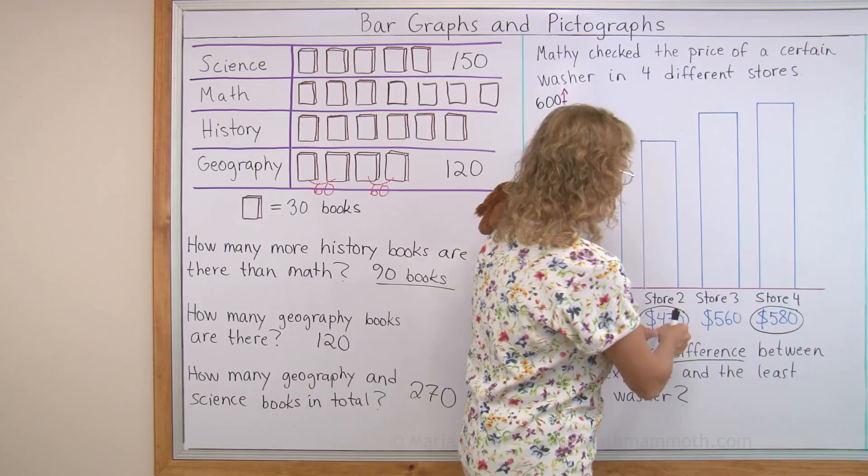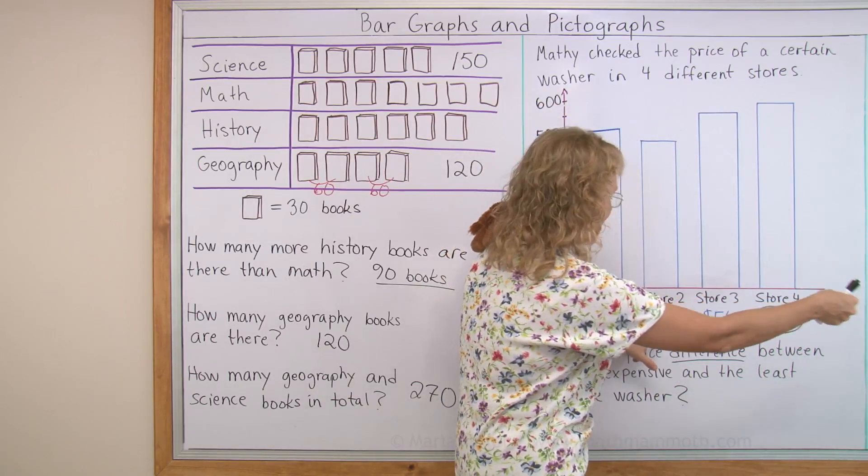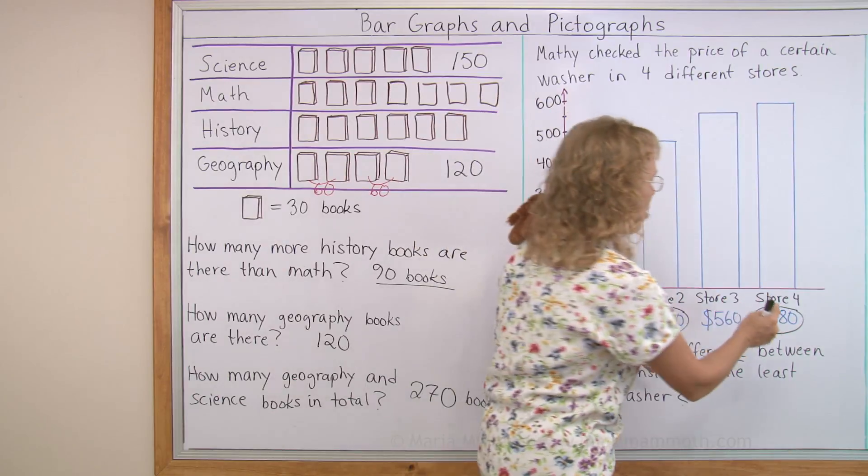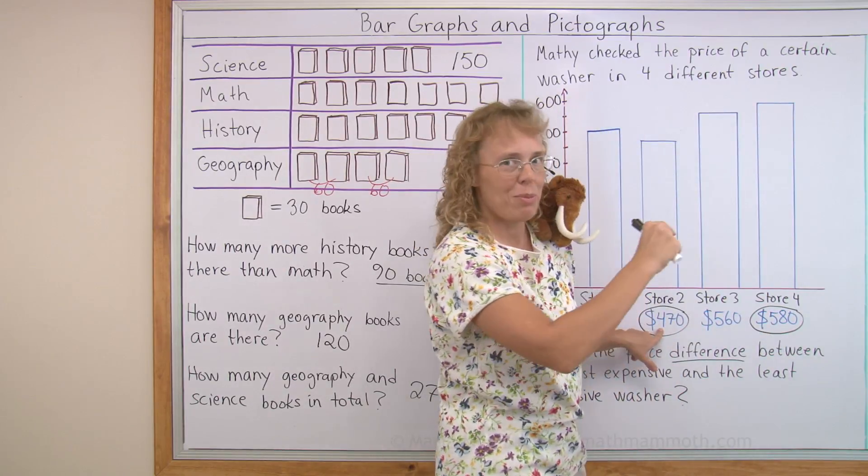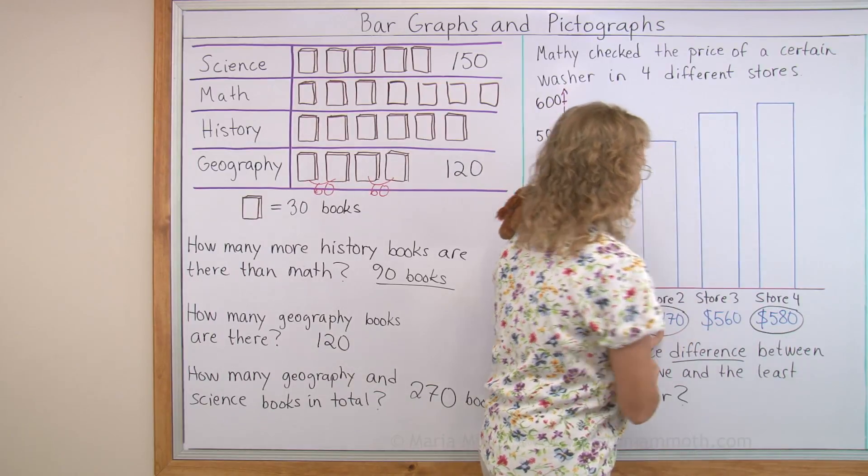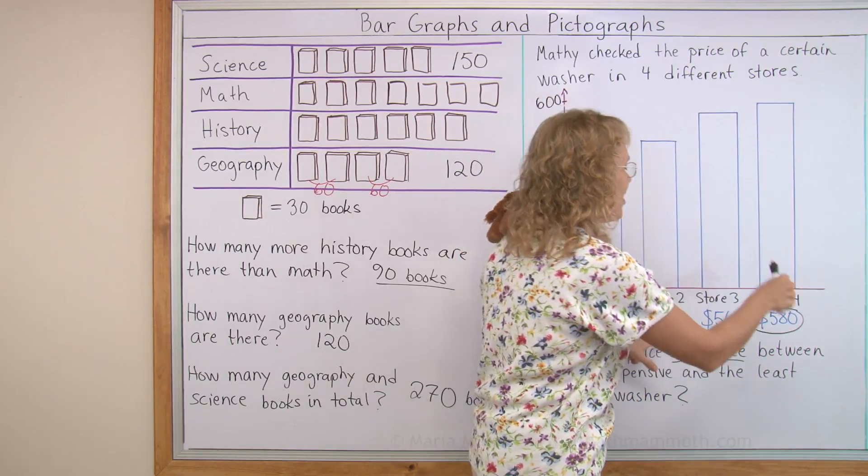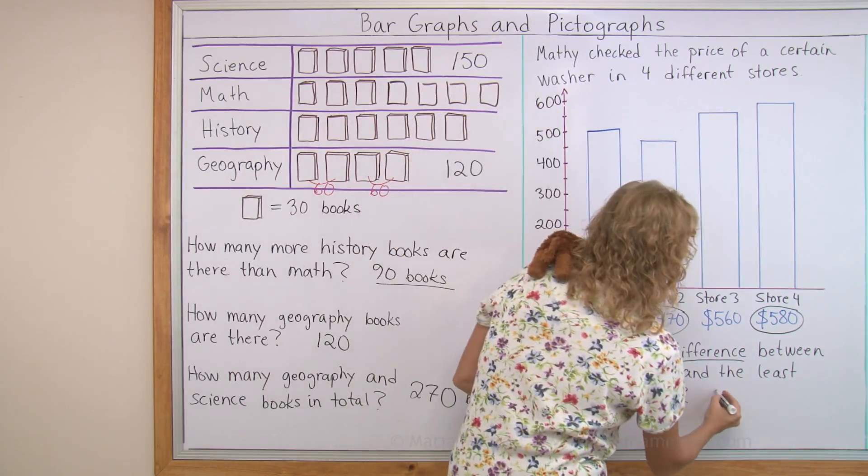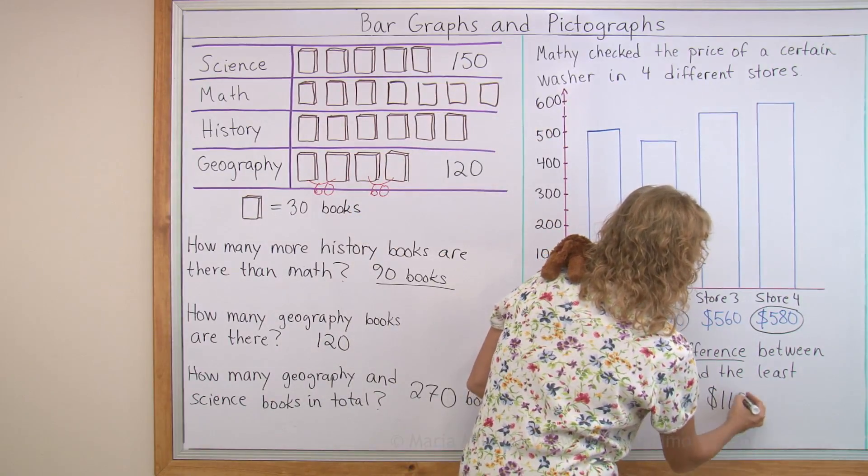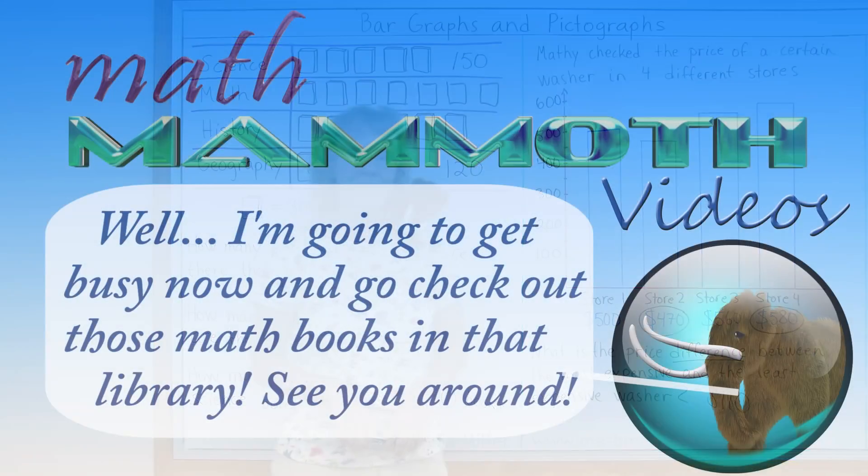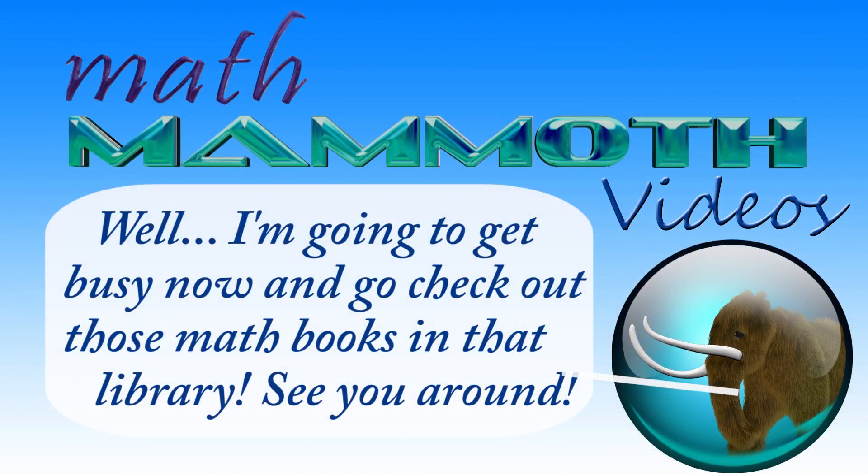From 470, if you jump 100 more, you would be at 570. You would be almost here, but you need to jump 10 units more or $10 to get to 580. So we go 110 more to get to 580. That's the difference. The difference is $110. I hope you followed that. We're all done with this lesson now.